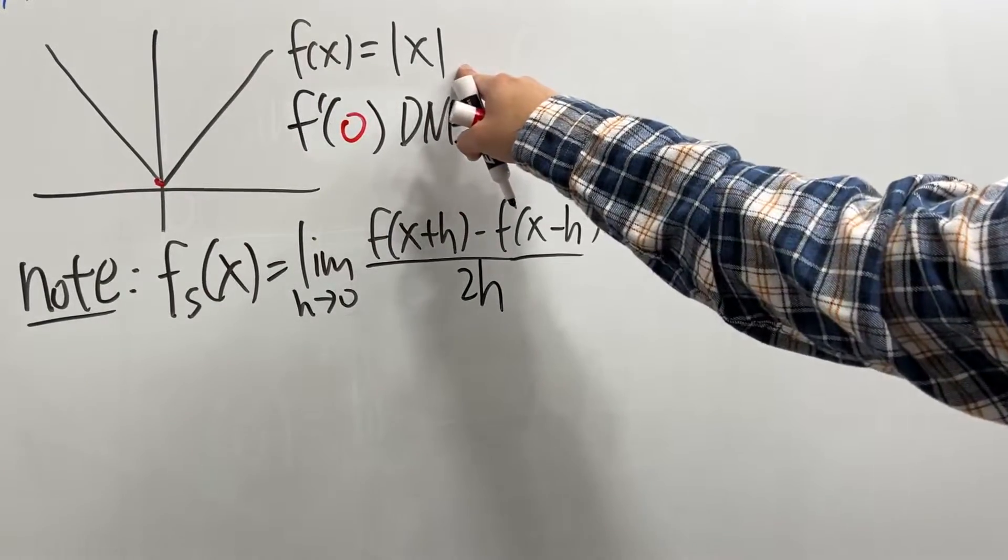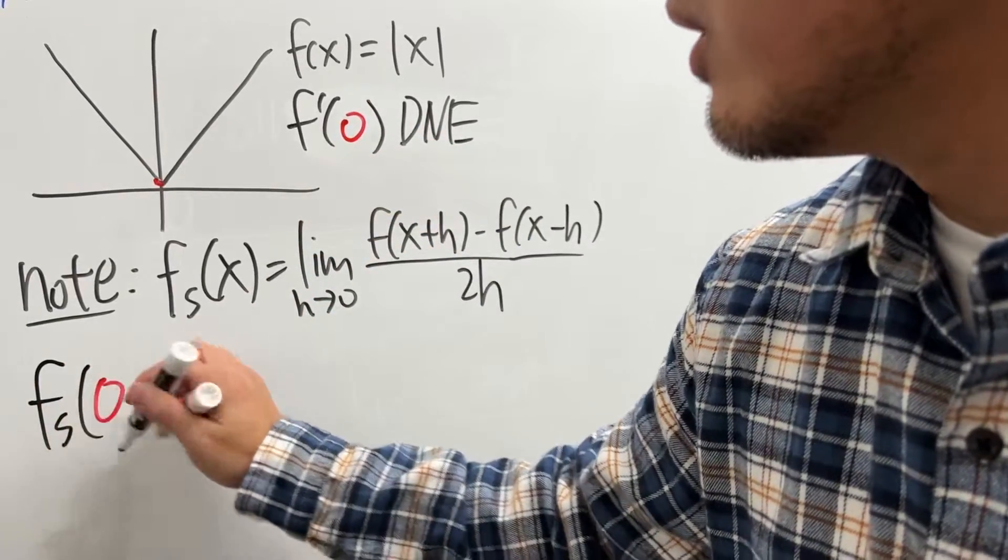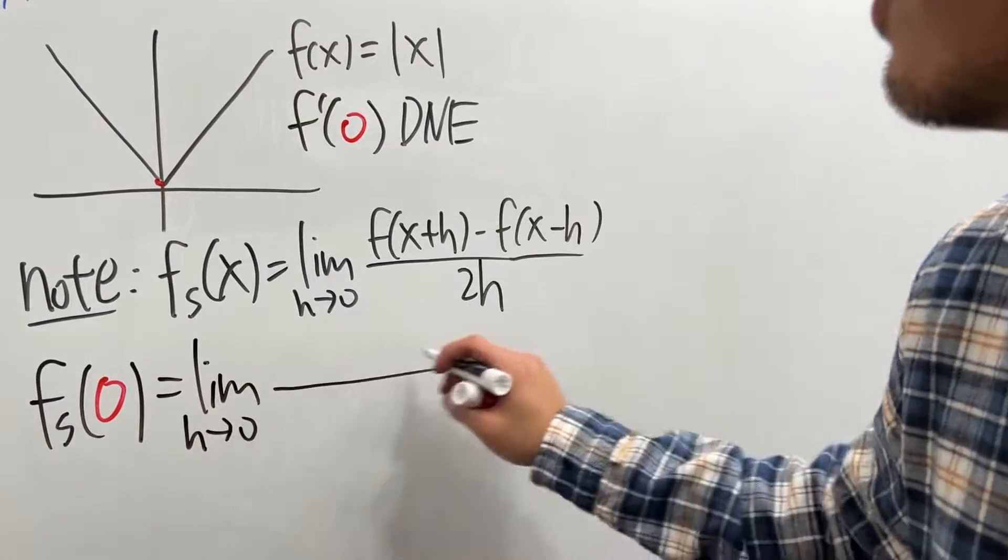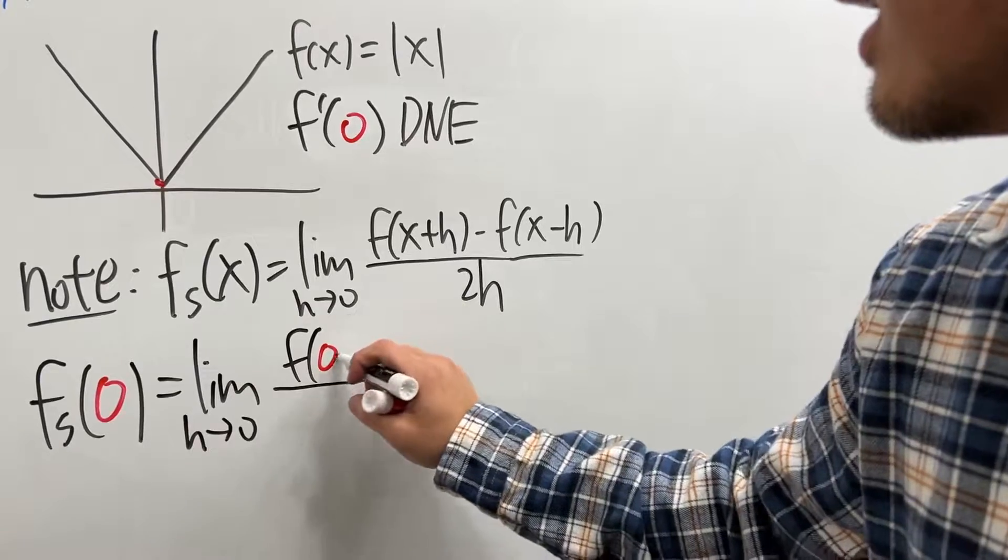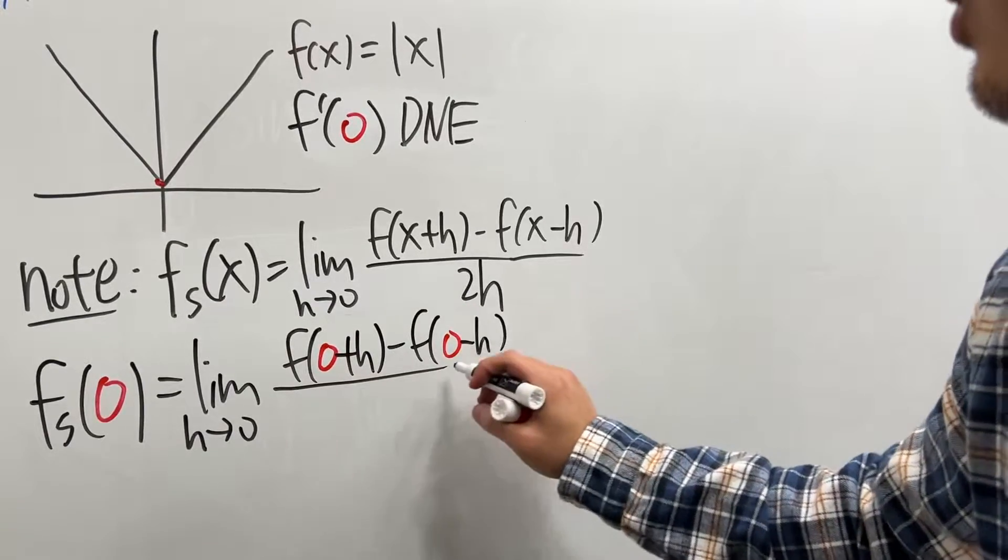So if you take this to be the function, and let's do the symmetric derivative at 0, f_s(0). This right here is just the limit as h approaches 0 of [f(0+h) - f(0-h)] over 2h.